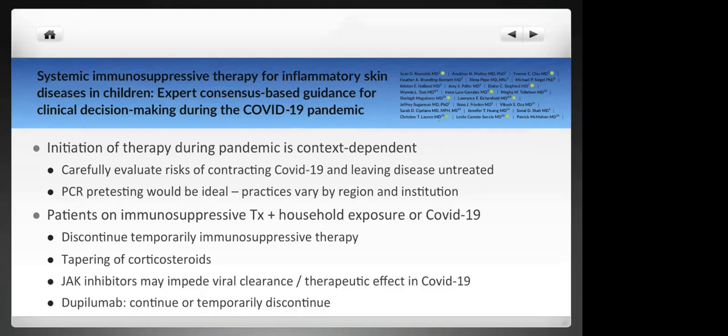A survey was passed to many experts in the US and Canada regarding the use of immunosuppressive therapy for children with inflammatory diseases, especially atopic dermatitis. Regarding initiation of therapy during the pandemic, it was considered dependent upon context and should be discussed with patients and caregivers — the therapy has risks but also advantages. The risk of contracting COVID-19 and leaving the disease untreated should be balanced and discussed. PCR pre-testing would be ideal but is difficult to achieve in many settings.